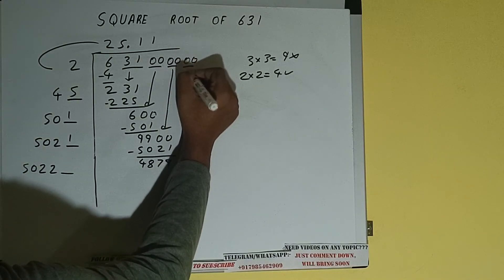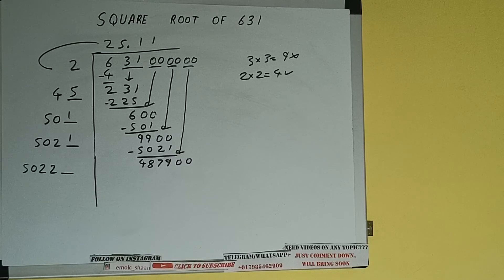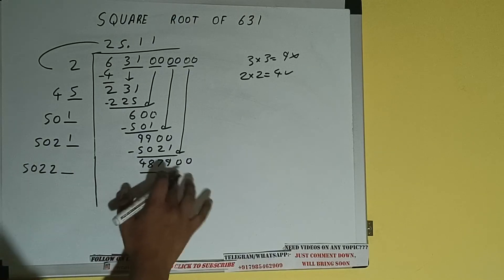It will be 487,900. Compare this 50 and 487, so 59 times is 450, so we can try nine times.